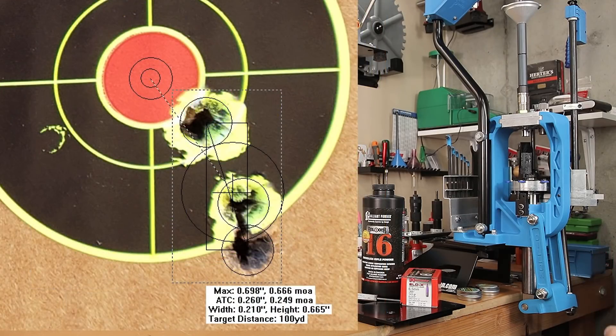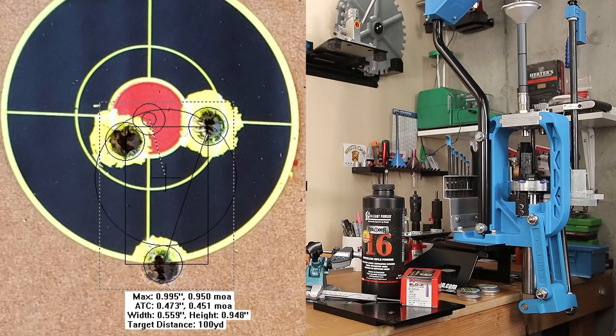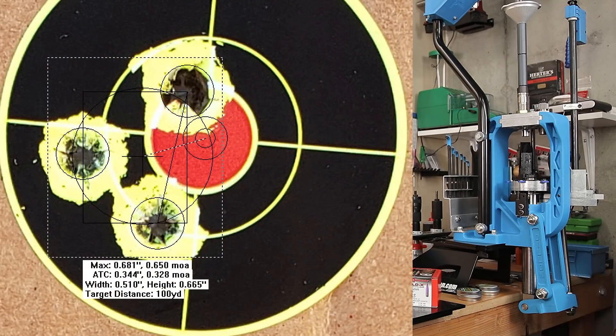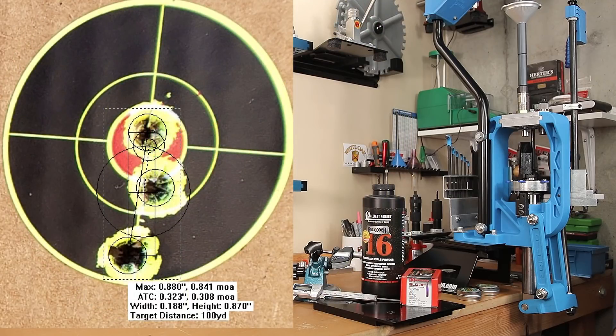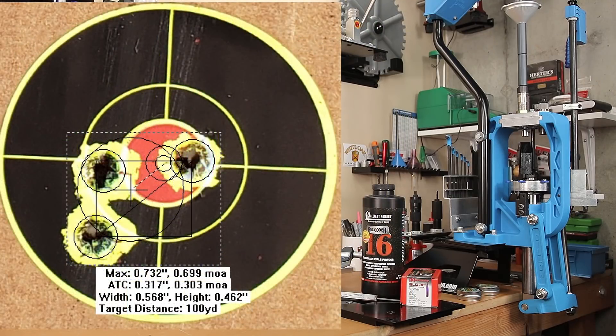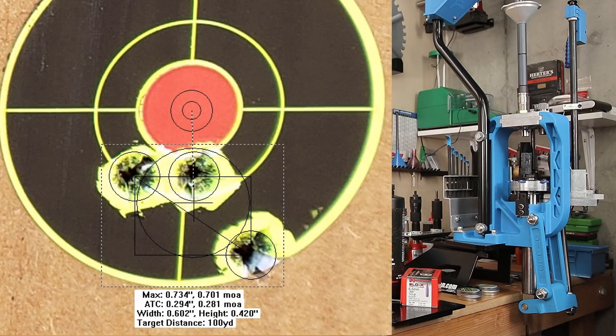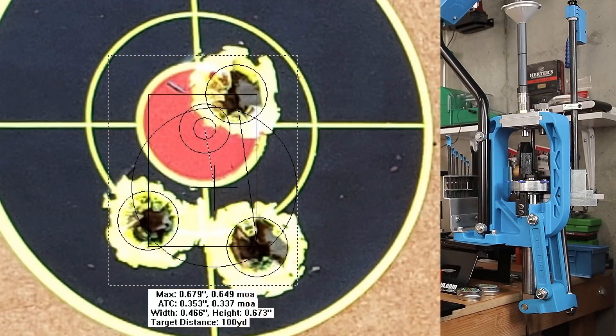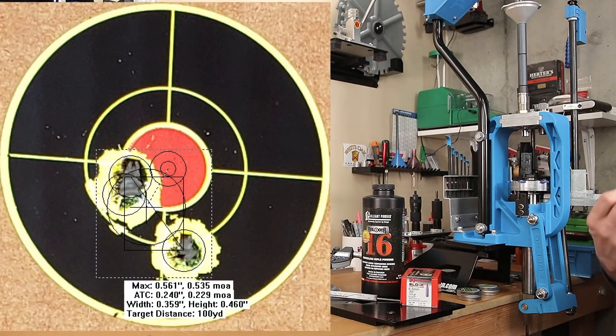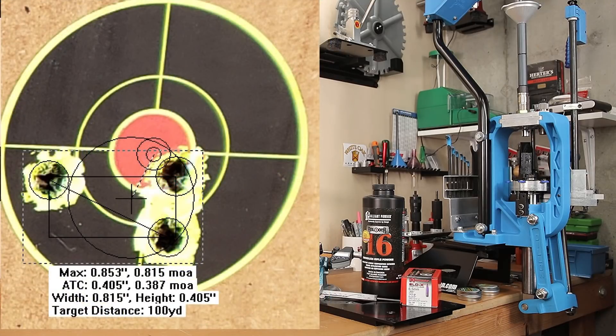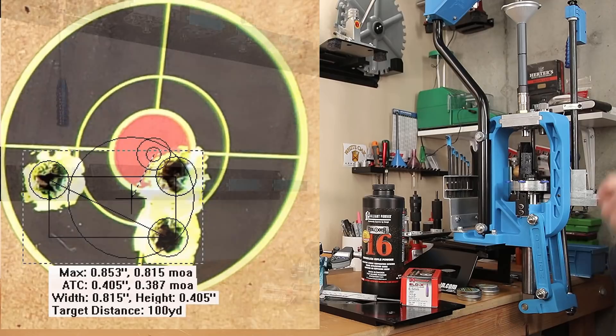2.204 was 0.95. At 2.201, 0.65 MOA. At 2.198, 0.841 MOA. At 2.195, 0.699 MOA. At 2.192, 0.701 MOA. 2.189, 0.646 MOA. 2.186, 0.535 MOA. And then for our last group, at 2.183, we jumped up to 0.815 MOA.